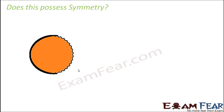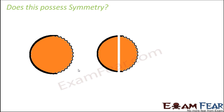Let us look at another figure. Here we have a similar circular sheet with a slight difference — half of it is plain and the remaining half is wavy. So what do you think? Does this possess symmetry? Let us try with the first line. If I assume this is the line of symmetry and draw a line like this, it gets divided into two halves. Do you think these two halves are exactly identical? No. The first half has a plain boundary and the second half has a wavy boundary, so they will never overlap with each other completely — they are not identical halves.